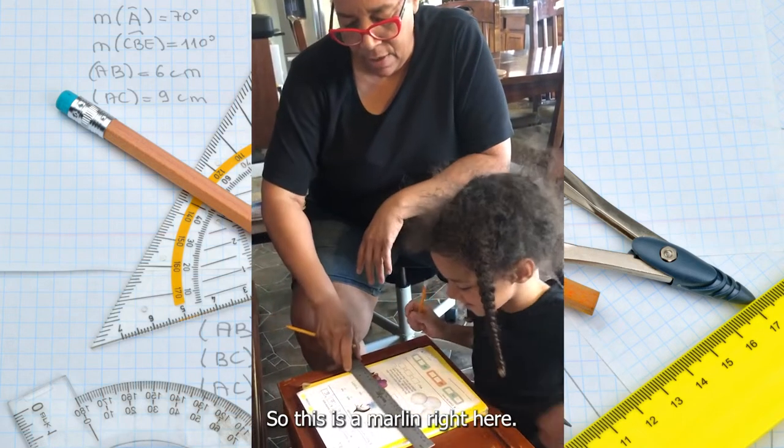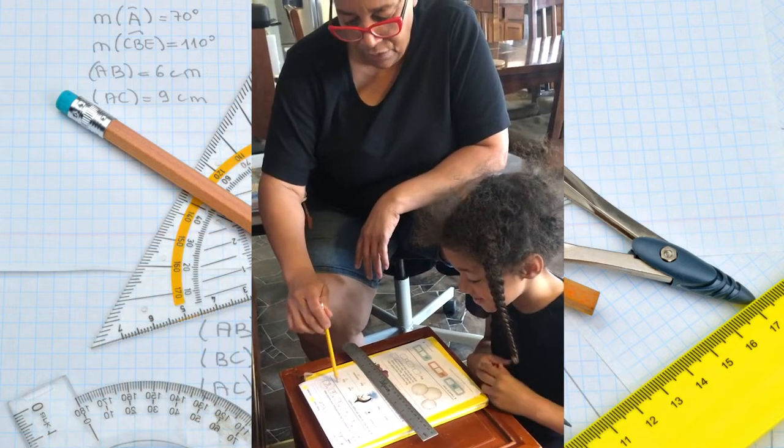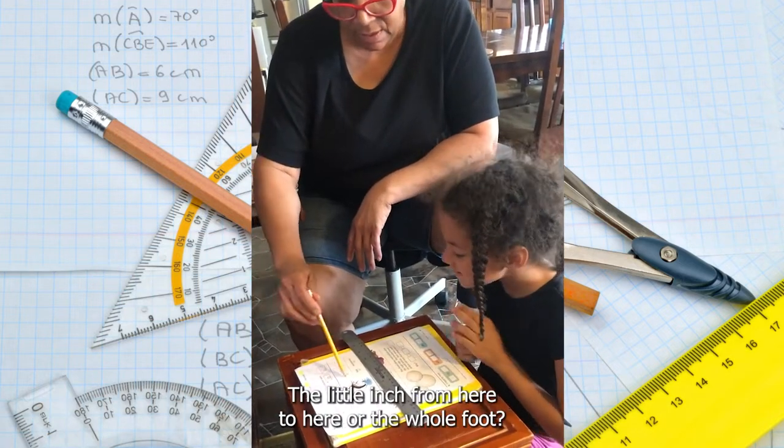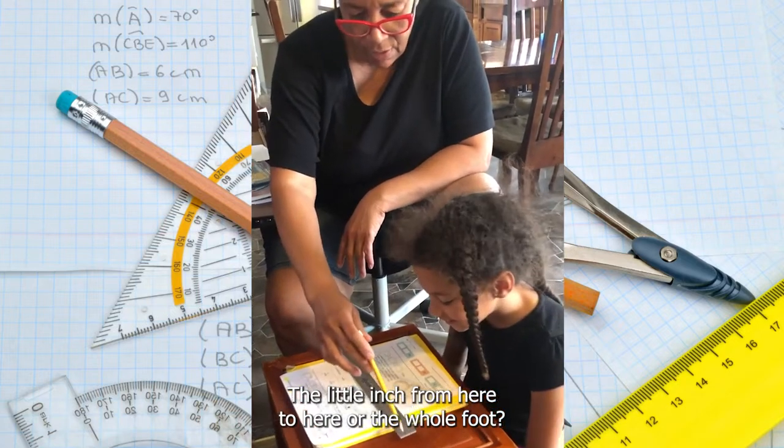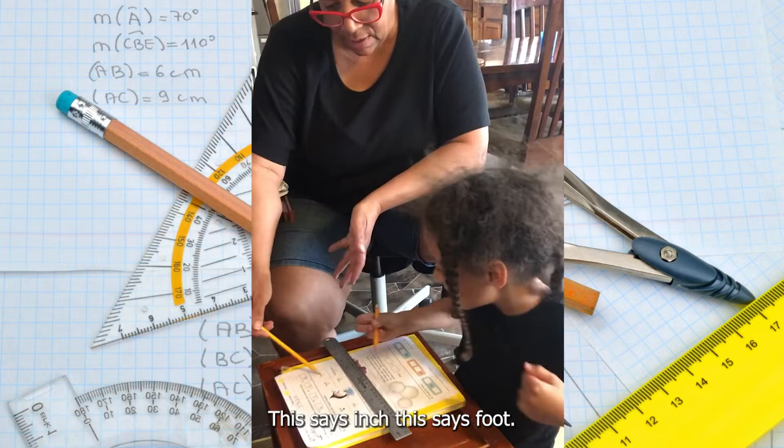Aisha, so this is a ruler right here, and which one is bigger, the inch or the foot? This whole thing is a foot. Which one is bigger, the little inch from here to here or the whole foot? The whole foot. Okay, so you got this. This is inch. That says foot.